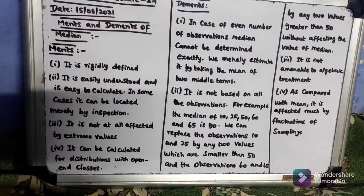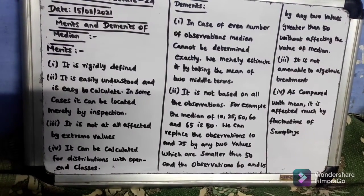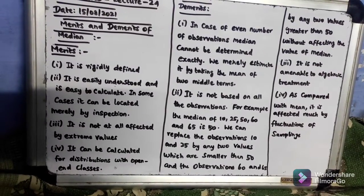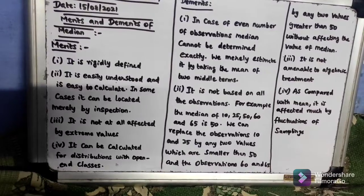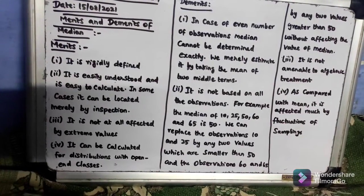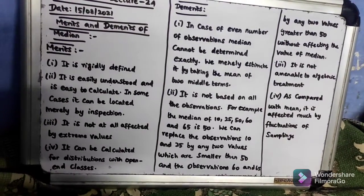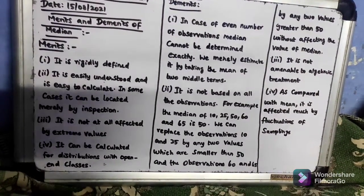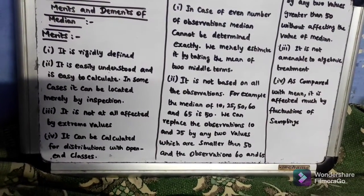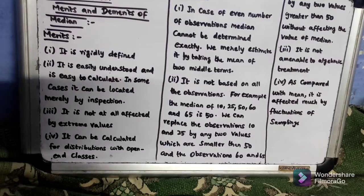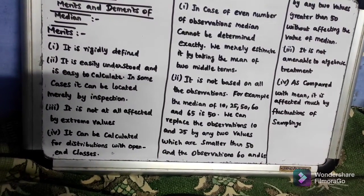Now for the demerits: In case of even number of observations, median cannot be determined exactly. We merely estimate it by taking the mean of two middle terms. It is not based on all the observations.